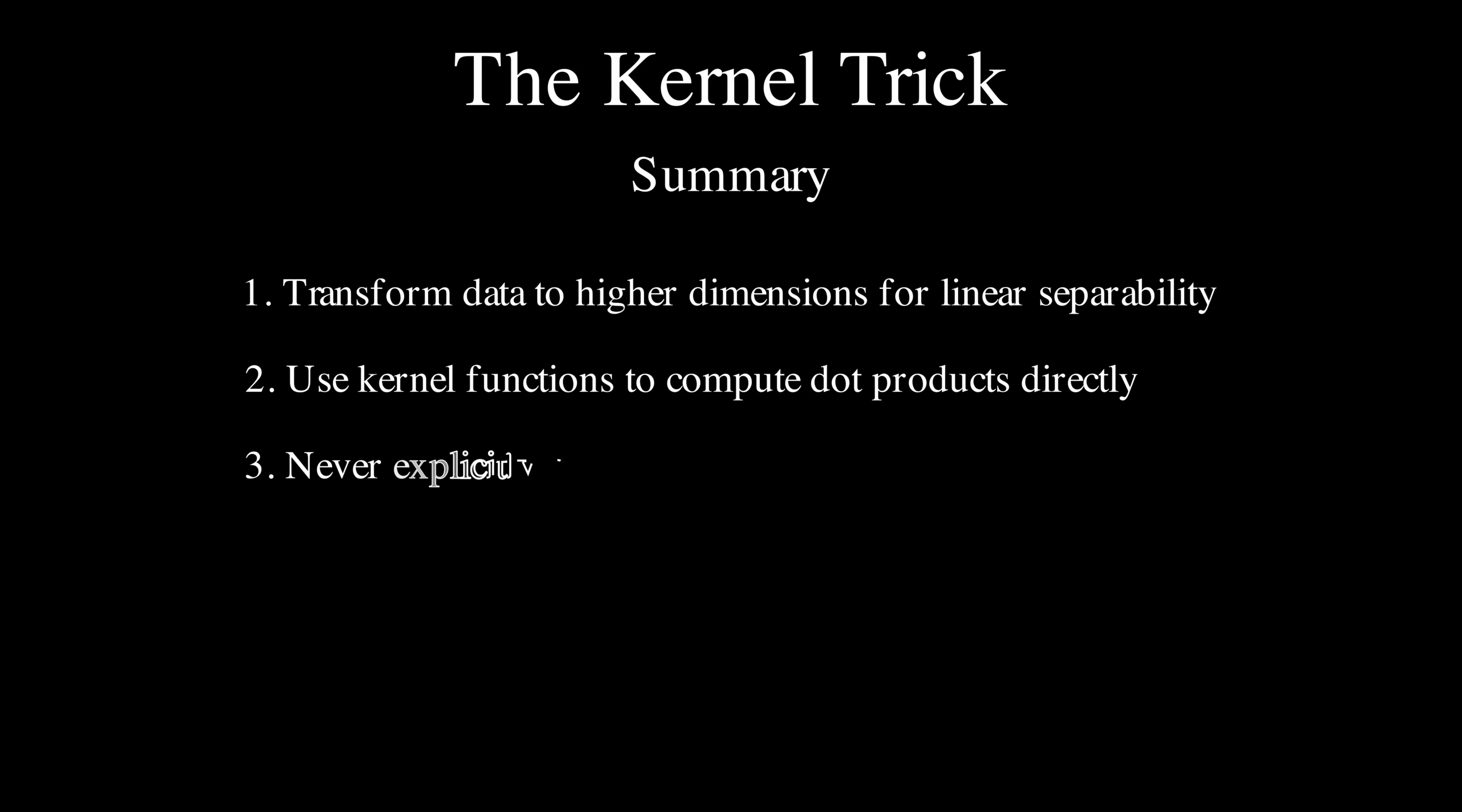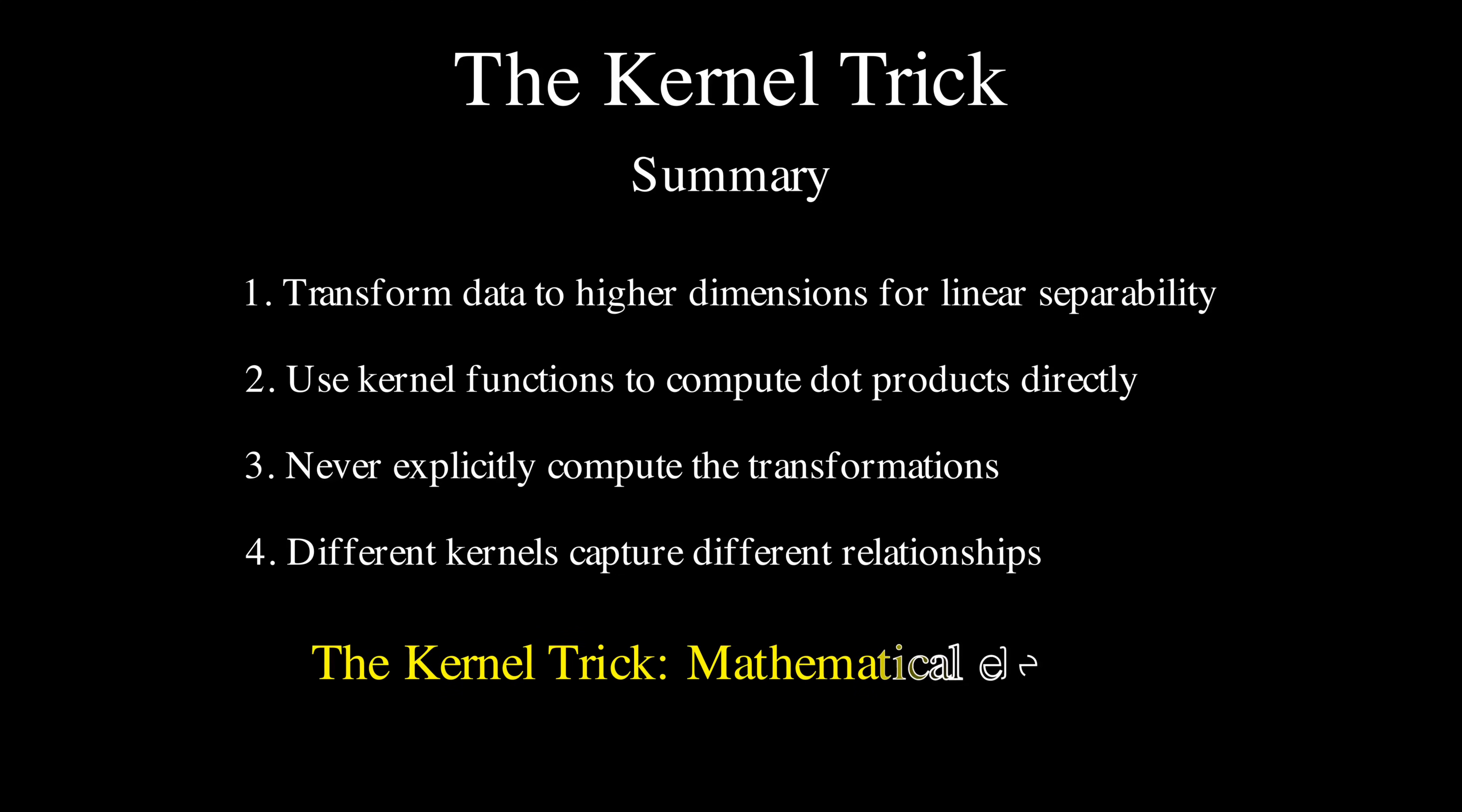Now, let's summarize what we have learned. When data isn't linearly separable, we transform it into a higher dimension where it becomes linearly separable. This transformation can create extremely high-dimensional spaces that would be computationally expensive to work with directly. The kernel trick lets us compute dot products in these high-dimensional spaces without ever transforming the data, making support vector machines practical for complex, non-linear classification tasks. This is why the kernel trick feels like mathematical magic. We are effectively working in a high-dimensional space without paying the computational cost. It's a beautiful example of how mathematical insight can lead to a powerful, practical algorithm.